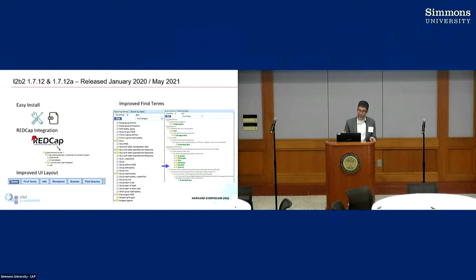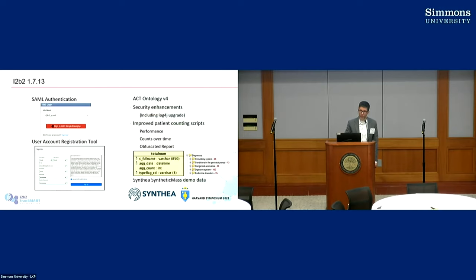Things that we did in 1.7.12 — this is a little bit old news now, but just to reiterate quickly. Things you might like about 1.7.12 if you haven't tried it yet: it's much easier to install now. We have a quick install guide; you can probably do it in 10 minutes just to try it out. There's REDCap integration — actual linkage of a live REDCap form submission to an I2b2 instance — and improved UI layout. We really focused on improving the find terms interface so you can find things much more easily now. We worked with the UI working group and looked at interfaces from other institutions, especially Leaf from UW, and modeled our new approach based on that.